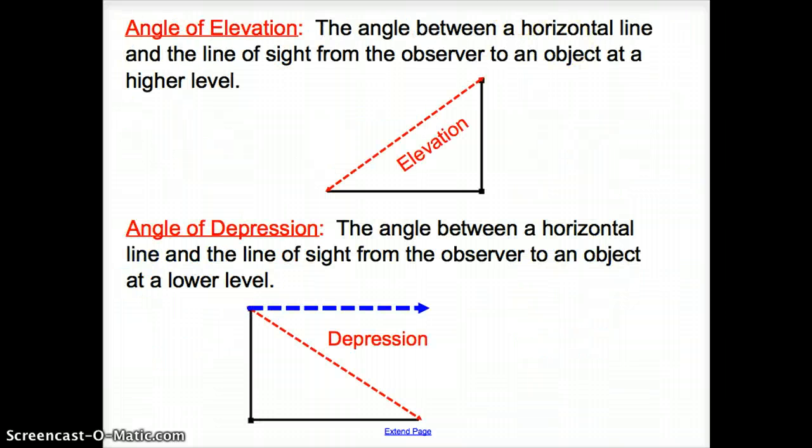A couple vocab words here. We have, first, the angle of elevation. The angle of elevation is the angle between the horizontal line and the line of sight from the observer to an object at a higher level. So here's our little picture, a little diagram. If here's my little dude, my little guy, my line of sight is here, but then my angle is from here to there because I'm looking up. So this is the angle of elevation going up.